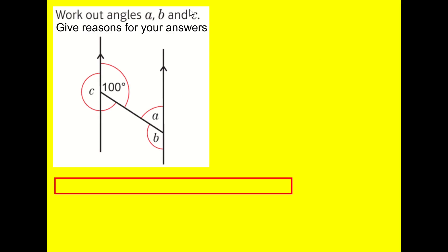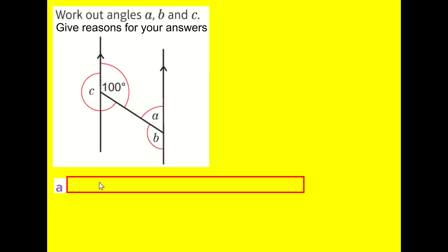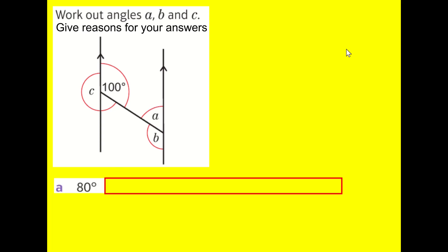There are a few ways you can do this. I'm going to jump straight to finding A. I know I've got parallel lines here, and so these two angles actually add up to 180. So it must be that A is equal to 80. And we say that the reason is that they are co-interior. So 100 and A are co-interior.